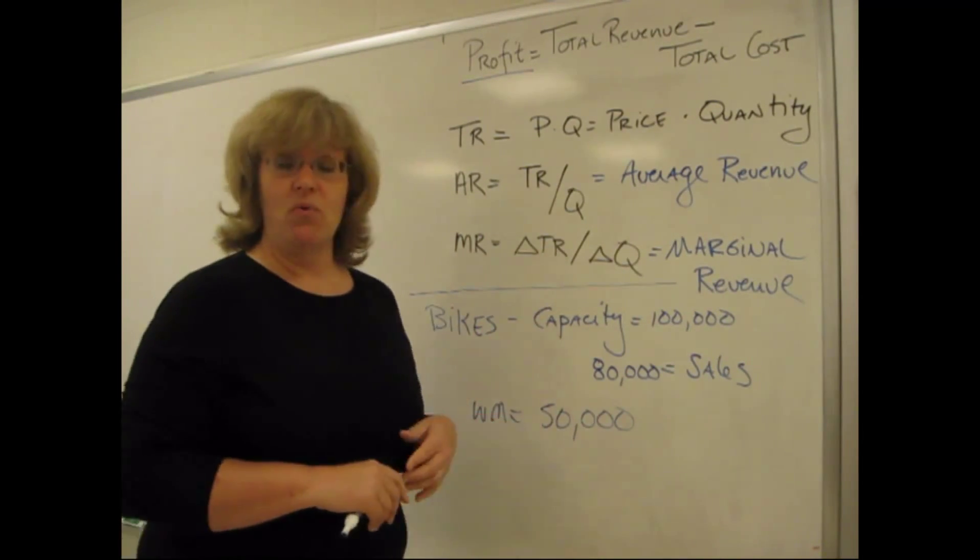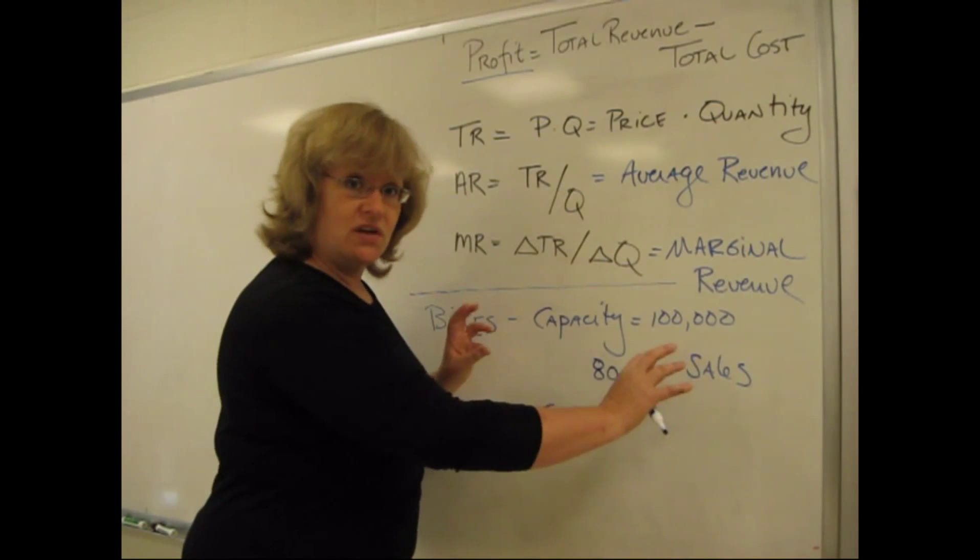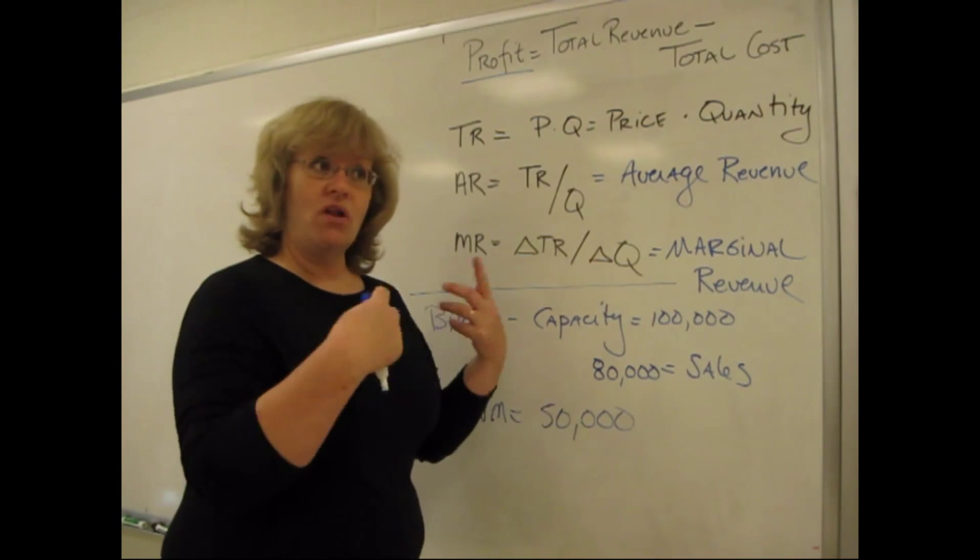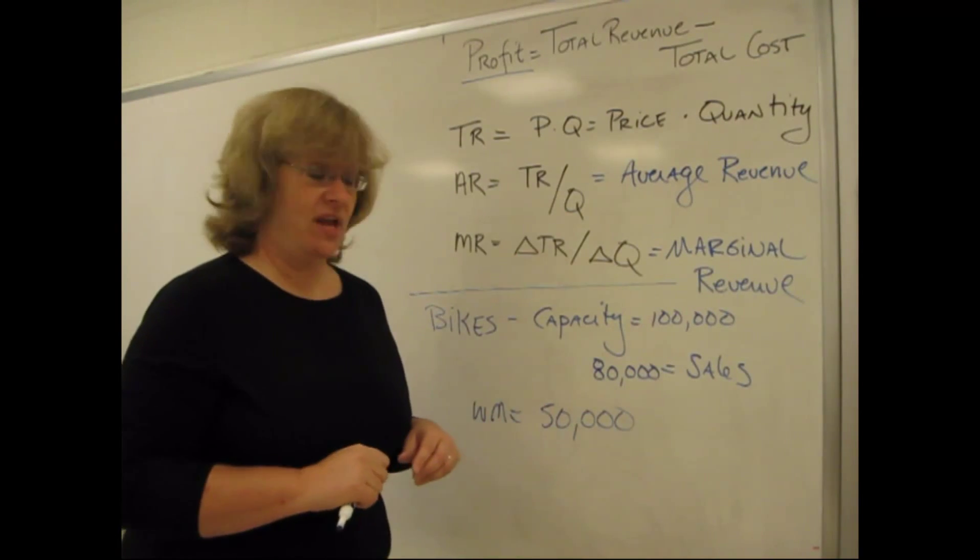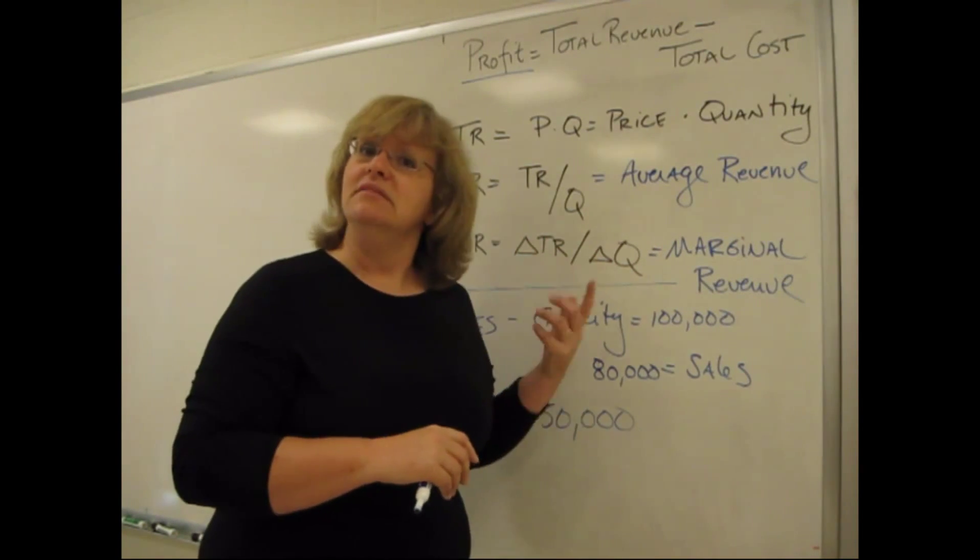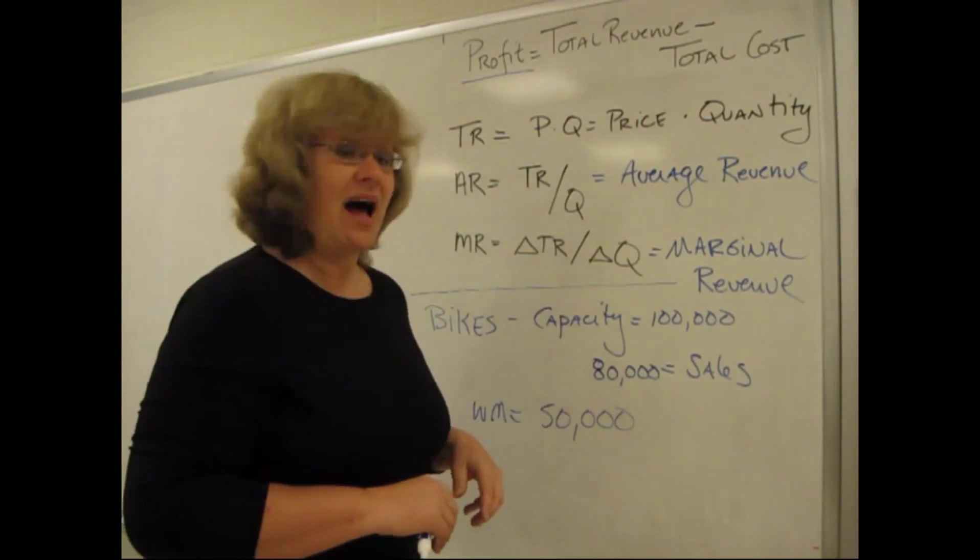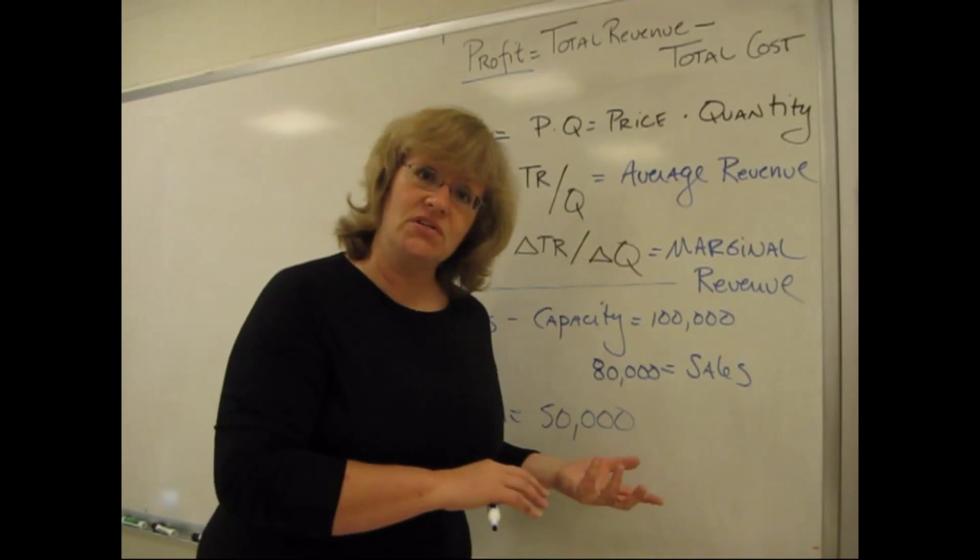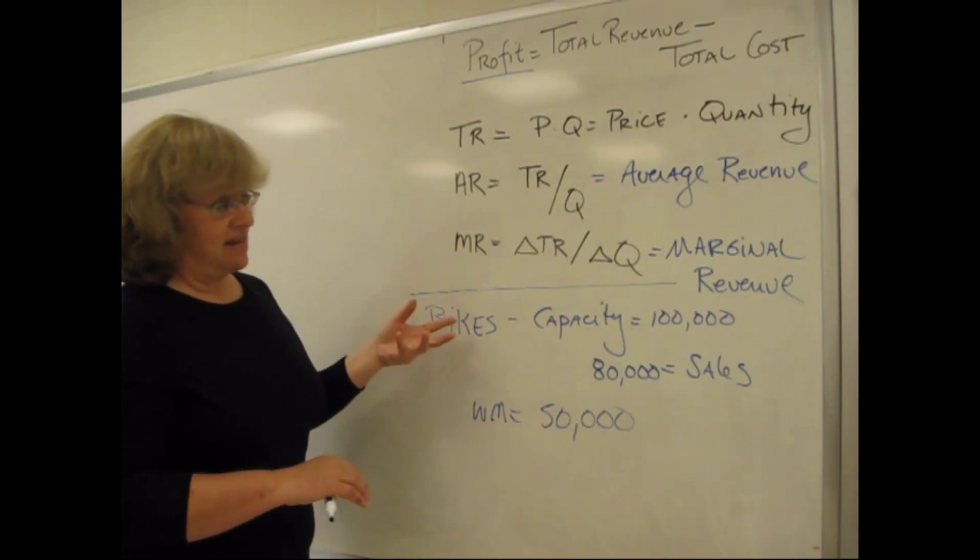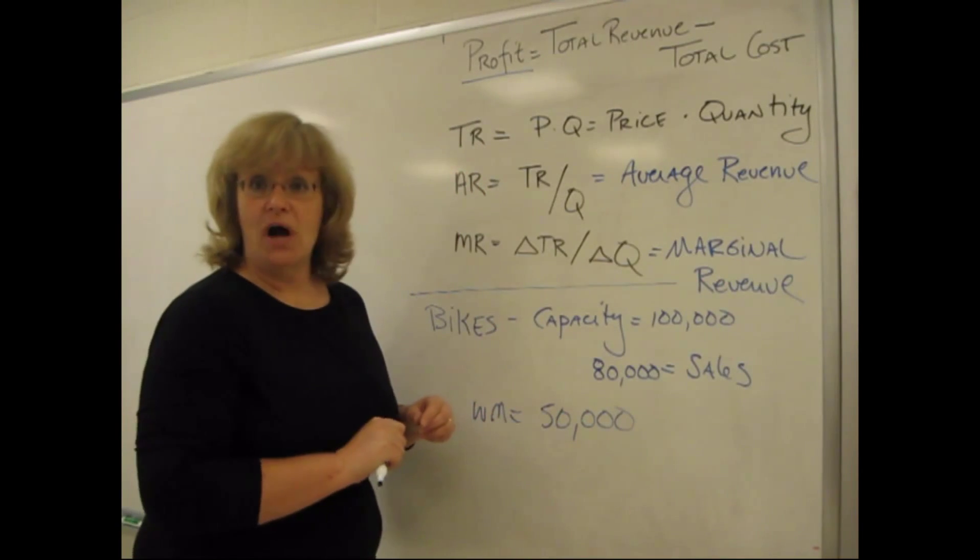Another implicit cost the company might want to consider is that if they've been selling high quality bikes for years, and they've got a really good association of good quality with their name, and they start selling lower quality bikes in Walmart, what happens to all of those wonderful brand associations that have been going along with their name all along? Do people start to associate their name, their brand, with bikes that might not last as long, that might have paint that chips, that might break down more often, that might simply not be as good quality a product? Those are two examples of implicit costs that we also worry about in economics, and are associated with the idea not only of explicit costs, the kind you write checks for, the kind you report to the IRS, but implicit costs as well.